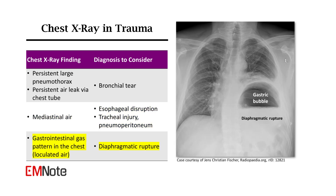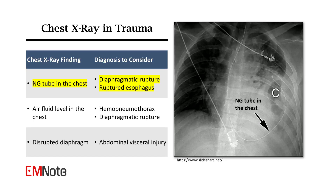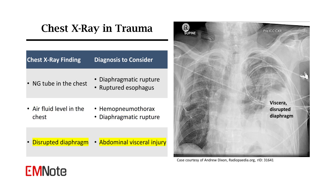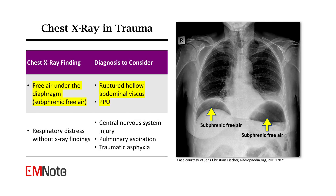A loculated gastrointestinal gas pattern in the chest may indicate diaphragmatic rupture. If a nasogastric tube is visualized within the chest, diaphragmatic rupture or ruptured esophagus should be considered. An air-fluid level in the chest may represent hemopneumothorax or diaphragmatic rupture. A disrupted diaphragm raises suspicion for potential abdominal visceral injury. Free air observed under the diaphragm may signify a ruptured hollow abdominal viscus.